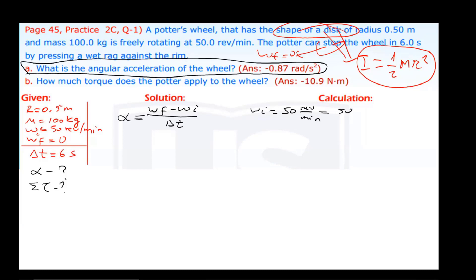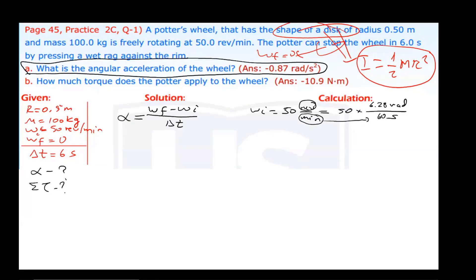I need to convert this 50 revolutions per minute to radians per second. One revolution is 6.28 radians — convert revolution to radian and write it in the numerator since revolution is in the numerator. But minute is in the denominator, and one minute is 60 seconds, so write that in the denominator. So 50 multiplied by 6.28 divided by 60 equals 5.23 radians per second. The initial angular speed of this potter's wheel is 5.23 radians per second.